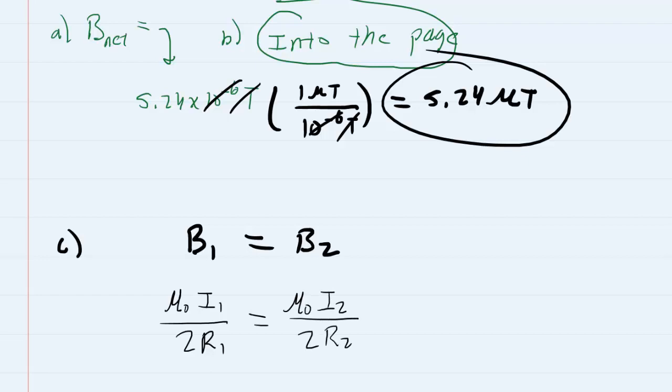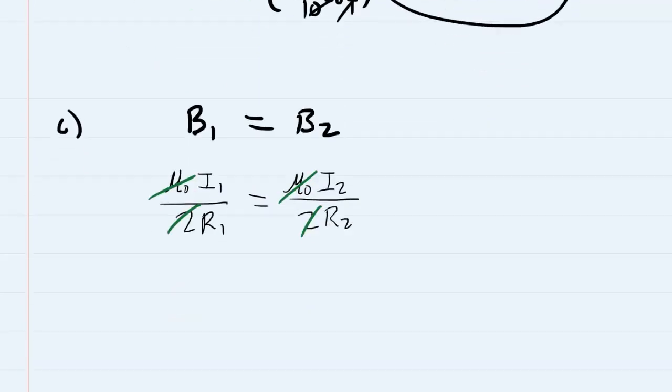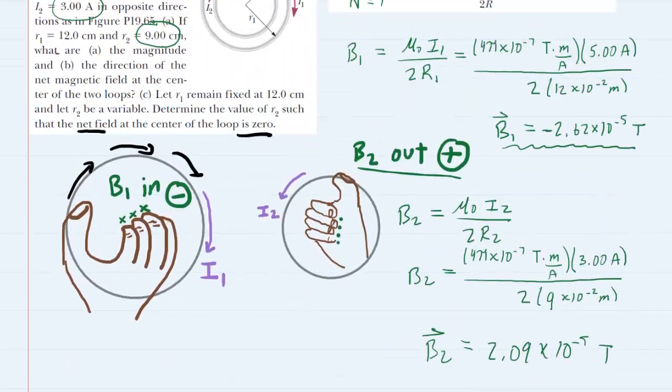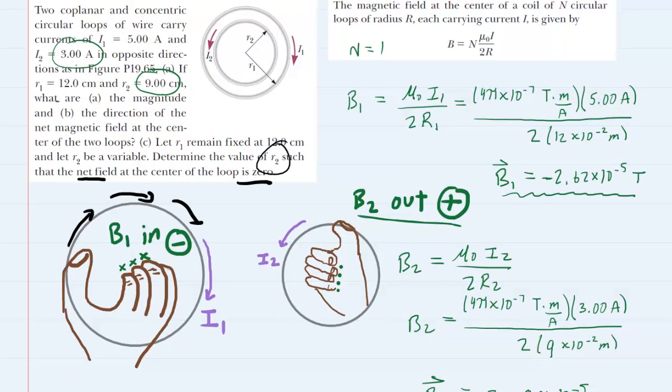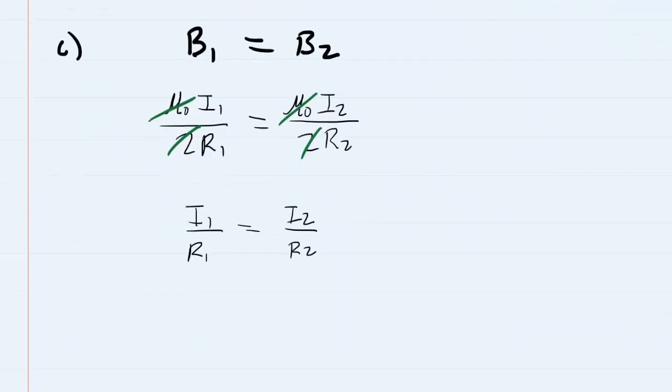We can divide both sides of the equation by mu so they cancel out. We can multiply both sides by 2 so that the 2s cancel out. So the equation greatly simplifies. We now have I1 over R1 is equal to I2 over R2. Recall the question is asking us to find R2 so let's solve this for R2.